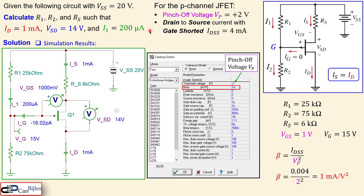This completes our P-channel JFET design example, where we calculated R1, R2, and RS from the given specifications. If you have any questions, comments, or suggestions about these examples or other videos on our channel, please let me know. I will try to answer as soon as possible. See you next time — take care.